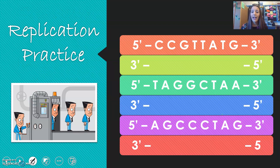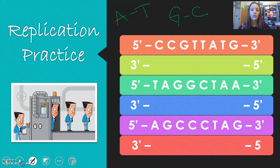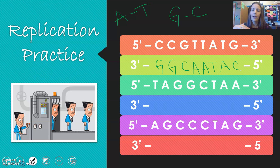Let's do some replication practice. Remember: A pairs with T, and G pairs with C. So: C pairs with G, C pairs with G, G pairs with C, T pairs with A, T pairs with A, A pairs with T, T pairs with A, G pairs with C. Go ahead and pause the video here to complete the replication for the other two remaining, then I'll do them so you can check your work.